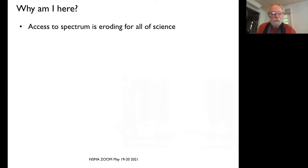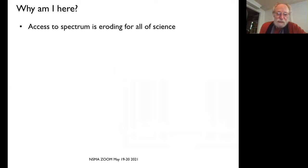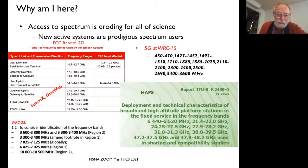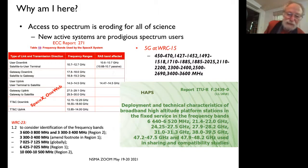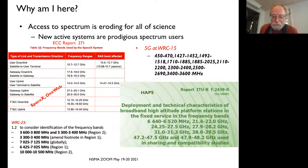So why am I here? Access to spectrum is eroding for science — not just astronomy. New active systems are prodigious spectrum users. Here are examples of what SpaceX and OneWeb do at K-band, 5G at two different frequencies, HAPs. Modern radio communication systems are not fixed links using a 10-megahertz channel you can coordinate away because they just don't point at your telescope. These are systems that are widely distributed on Earth, widely distributed in the sky, and widely distributed in spectrum. We just have to learn to deal with them because they're not doing anything they're not permitted to do.